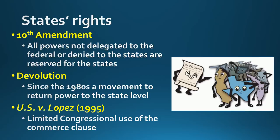So the Commerce Clause has been used to significantly increase federal power. After 200 years of the federal government gaining more power through cases like McCulloch versus Maryland and those clauses, we have seen a trend in recent years towards states' rights again. The 10th Amendment has once again become important — it says that all powers not delegated to the federal government or denied to the states are reserved for the states and to the people. This is the idea of devolution — a movement to return power the national government has taken back to the state level. One of your required cases, US versus Lopez 1995, actually limited Congress's use of the Commerce Clause for the first time in nearly 60 years.